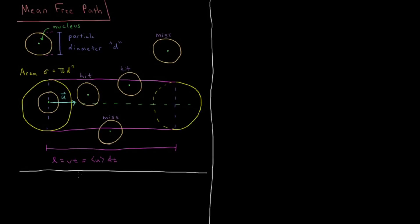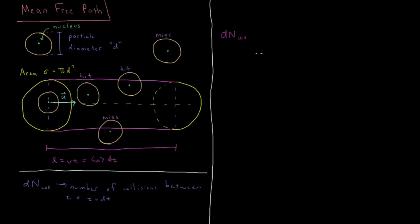We're interested in the number of collisions that are going to occur during some period of time. We're going to define a quantity called dN_coll — number of collisions — and that is going to be the number of collisions that one given gas particle has between t and t plus dt. It's actually more straightforward than you might think to calculate that value, because the number of collisions we expect to occur in a given time frame is going to be equal to the number of particles inside this cylinder, which equals the total volume of the cylinder times the density of the gas.